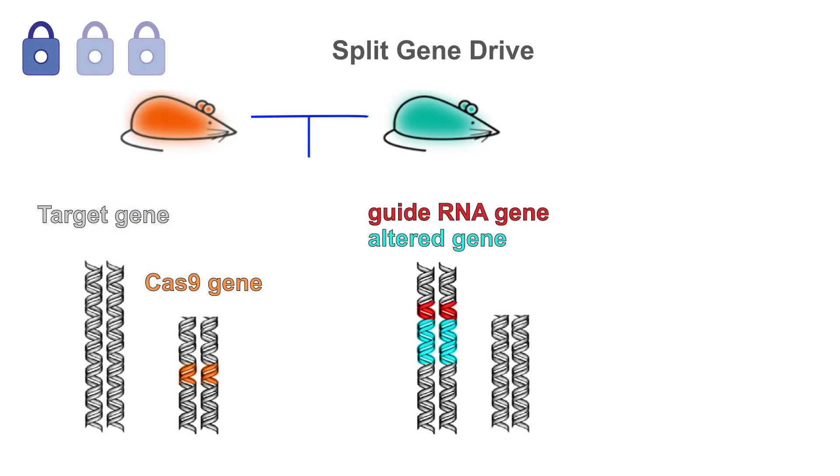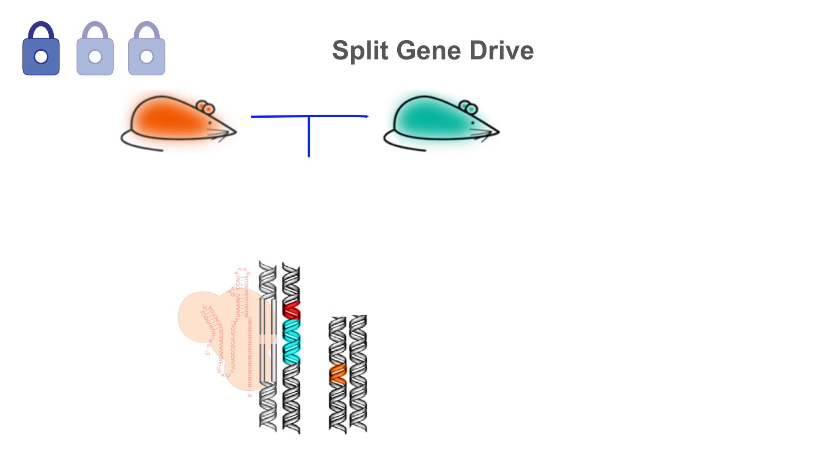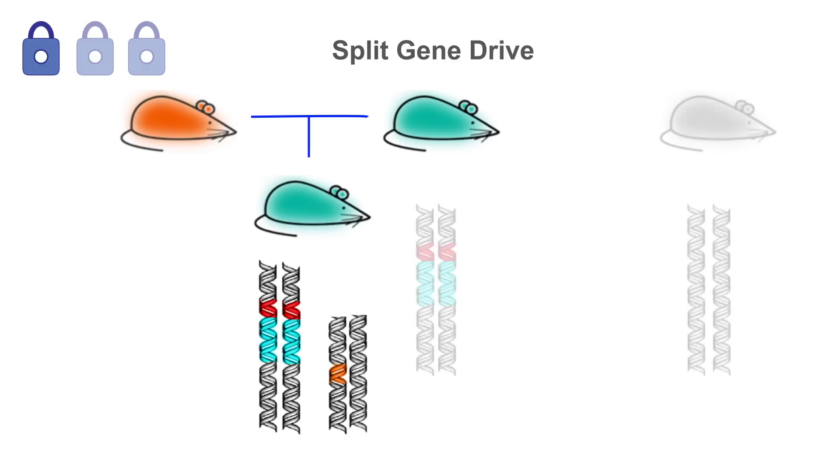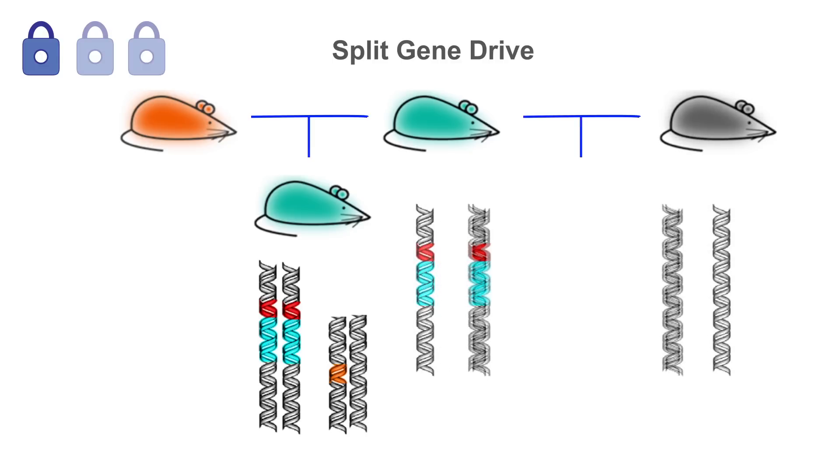When it mates with the laboratory organism carrying the Cas9 gene, the drive is active, causing the alteration and guide RNAs to be inherited by all offspring. But when it mates with a wild counterpart that is not carrying the Cas9 gene, the gene drive does not function.